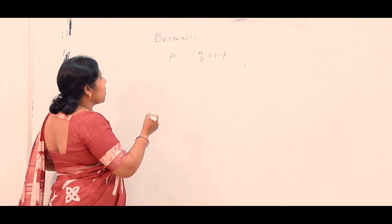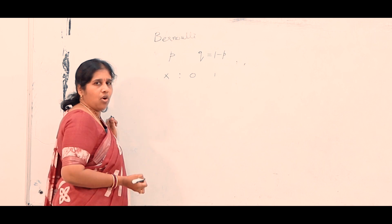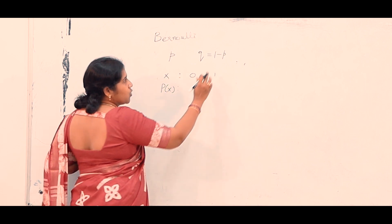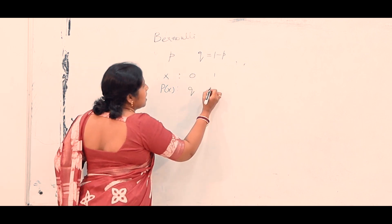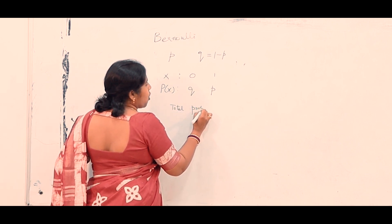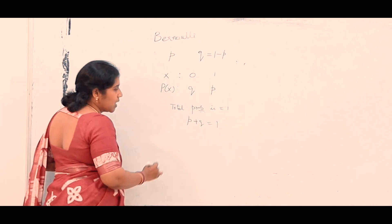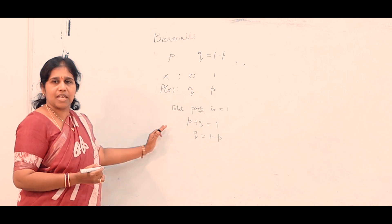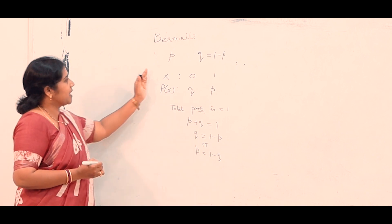The Bernoulli distribution takes only two possible values: zero and one. The probability of zero (failure) is q, which is one minus p, and the probability of one (success) is p. Success plus failure equals one, so q equals one minus p, or equivalently, p equals one minus q.